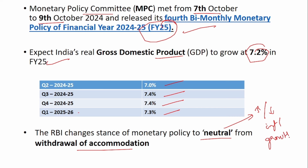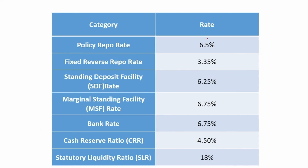In neutral stance, equal importance will be given to both inflation and growth. In the case of withdrawal of accommodation, more importance was given to inflation. All rates have been kept unchanged: policy repo rate 6.5%, reverse repo rate 3.35%, SDF 6.25%, MSF 6.75%, bank rate 6.75%, CRR 4.5%, and SLR 18%.